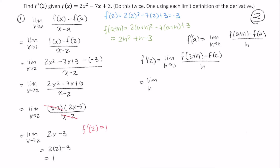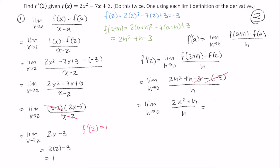This is the limit as h approaches 0 of 2h squared plus h minus 3 minus a negative 3 over h. Negative 3 minus a negative 3 becomes positive, and that's 0, so I have the limit as h approaches 0 of 2h squared plus h divided by h, which is the limit as h approaches 0 of h times 2h plus 1 divided by h. We can cross these out because h divided by h is 1.